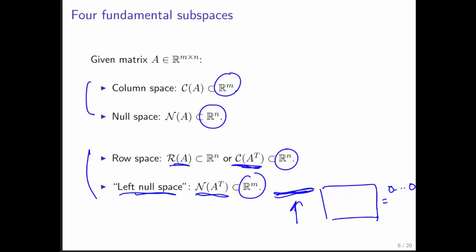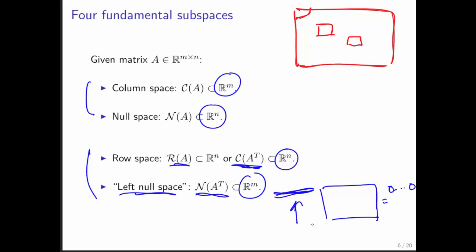It's important to also think about what the dimensions of these different subspaces are. We have a matrix A, and when we reduce it to row echelon form, we get k pivots. The dimension of the column space is k, the dimension of the null space is n minus k, the dimension of the row space is k, and the dimension of the left null space is m minus k.